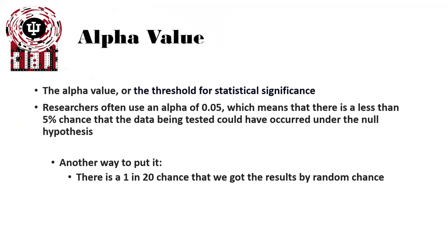This really hinges upon the alpha value itself — the alpha value or the threshold for statistical significance. Typically, we use an alpha of 0.05, which means there's a 5% chance the data being tested could have occurred under the null hypothesis. Another way to put it is there's a 1 in 20 chance that we got the results by random chance.